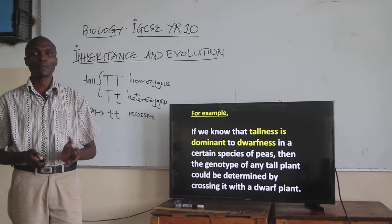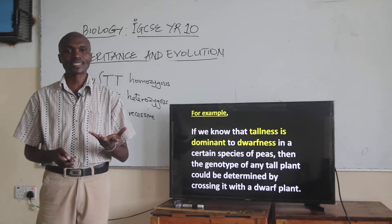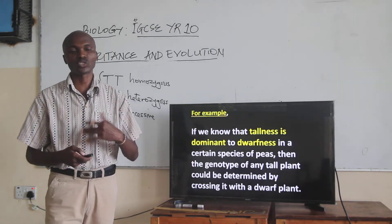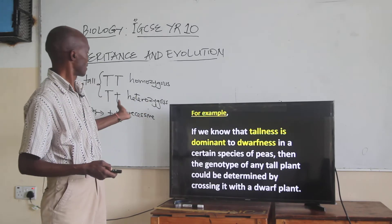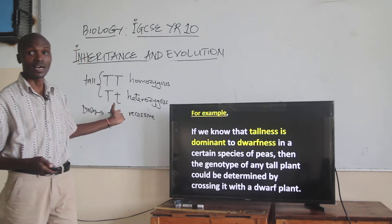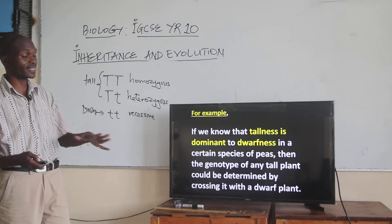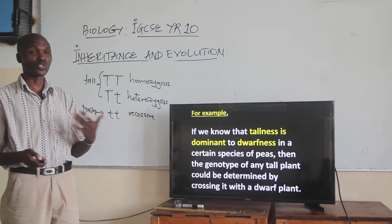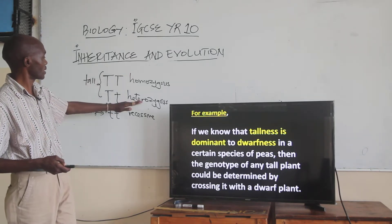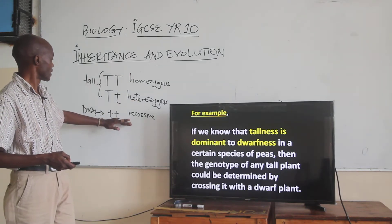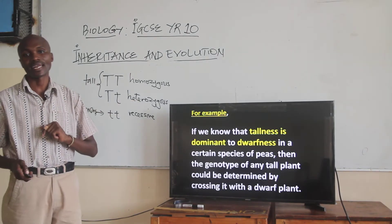Welcome to session two of our lesson. We are discussing a piece of tall plant being crossed with a short plant. So there are two varieties, as we talked about: homozygous tall, heterozygous, and the dwarf variety is actually an existing one.